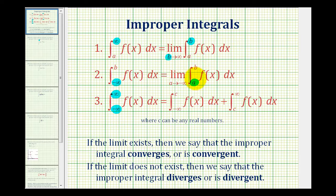Of course we don't have to use A and B, but that's pretty normal. Notice on number three, if both limits of integration involve negative and positive infinity, we're going to have to break it up into two different improper integrals where C can be any real number, and then we have to apply number one or number two to both of these integrals. If the limit exists, we say the improper integral converges or is convergent; if the limit doesn't exist, we say the improper integral diverges or is divergent.